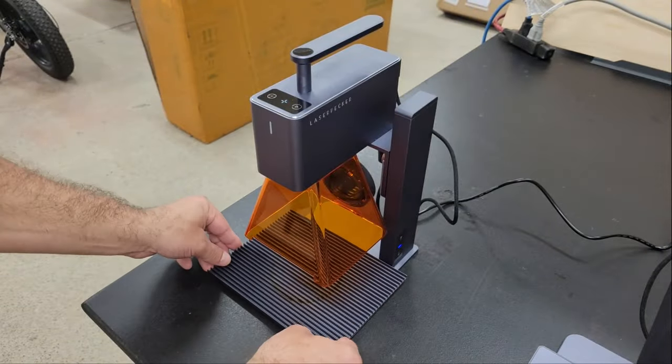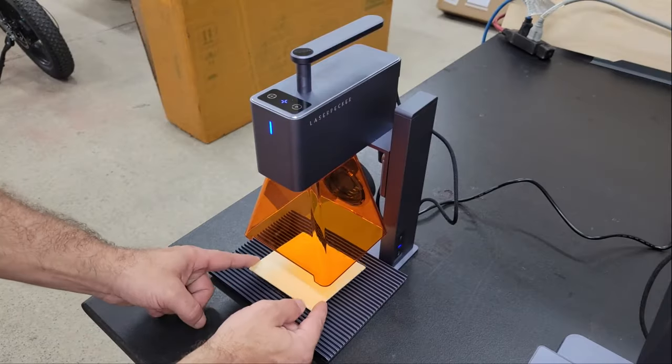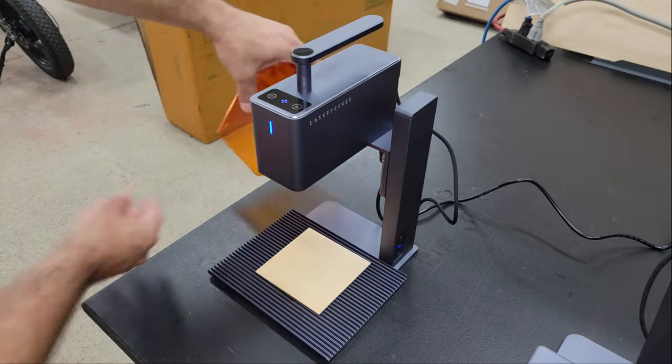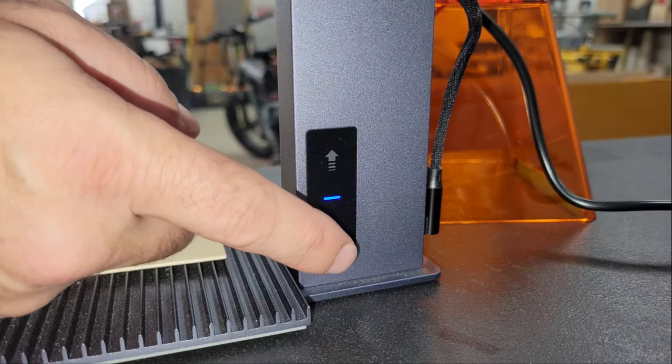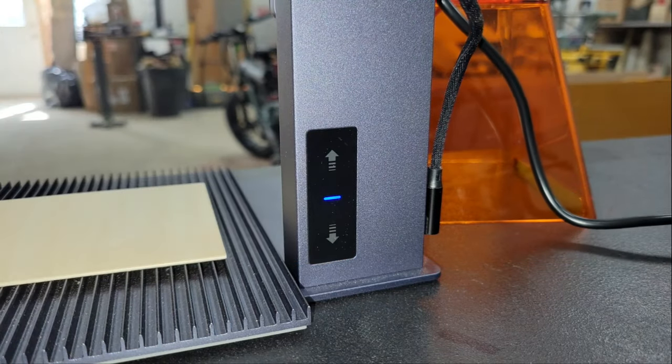For my first test I'm going to engrave and cut my logo out of this piece of 2mm birch plywood. The first method for setting the focal point is by using a ruler to set the bottom of the module at 110 millimeters from the surface of your work piece.